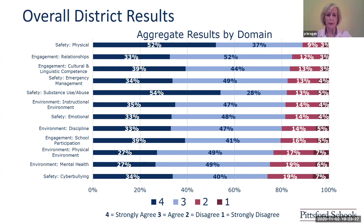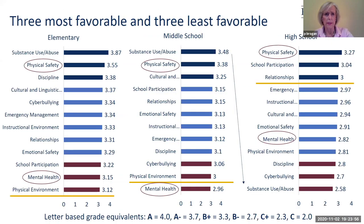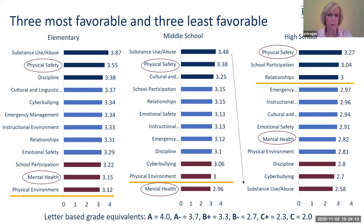Overall, the scores show in the favorable range — that's the terminology used in the survey, favorable or unfavorable. The darker blue would be more favorable; red to dark maroon will be least favorable. Overall, while there are highs and lows, all of those are within the favorable range. We first looked at a broader stroke to see what were the three most favorable at each level and the three least favorable at each level.